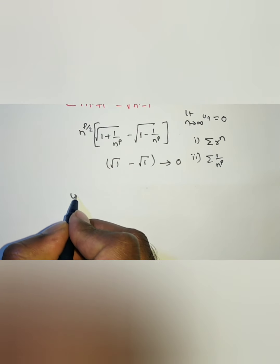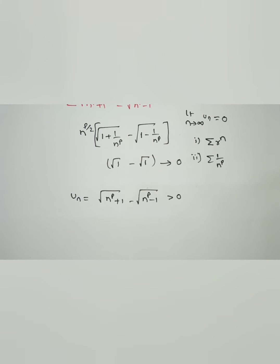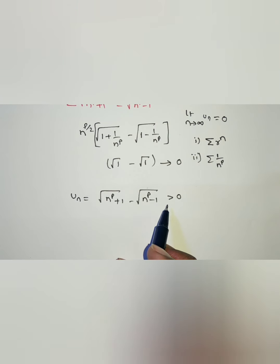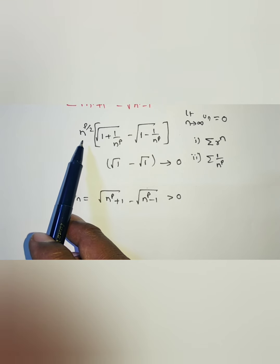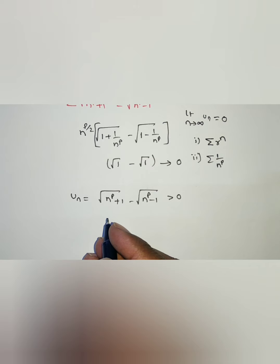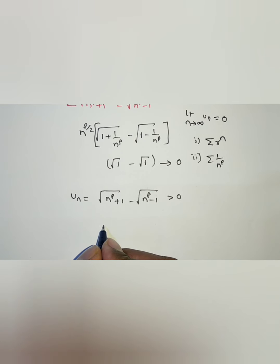In the limit comparison test, u_n equals square root of n power p plus 1 minus square root of n power p minus 1, which is a positive series. Because putting n equal to 1 gives root 2 minus 0, which is greater than 0. So it is a series of positive terms. In the limit comparison test we have to choose v_n, but since this is a root function, we have to rationalize with the conjugate. If you rationalize with the conjugate, the value of the term won't change.